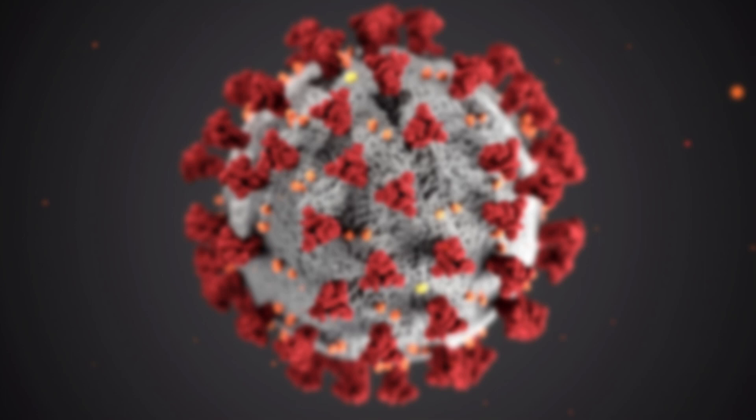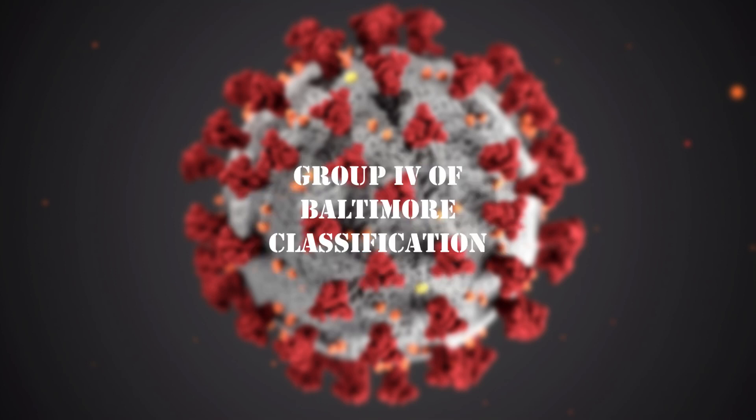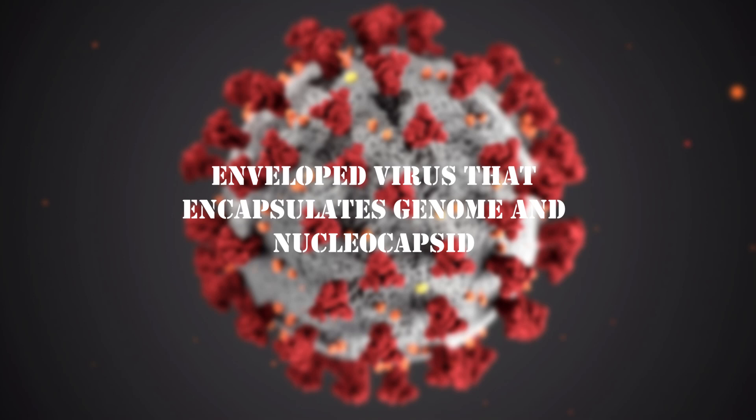Now let's see the virus classification. Coronavirus constitutes the subfamily Orthocoronavirinae in the family Coronaviridae, of order Nidovirales and realm Riboviria. They are classified under group 4 of the Baltimore classification as they possess a positive-sense single-stranded RNA genome. These are enveloped viruses that encapsulate the RNA genome and the nucleocapsid of helical symmetry.